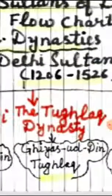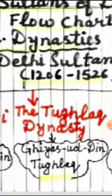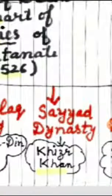The third dynasty is the Tughlaq dynasty, founded by Ghiyas-ud-Din Tughlaq. Next is the Sayyad dynasty, founded by Khizar Khan. And the last dynasty of the Delhi Sultanate is the Lodi dynasty, founded by Ibrahim Lodi.